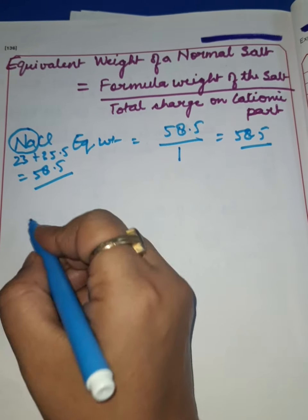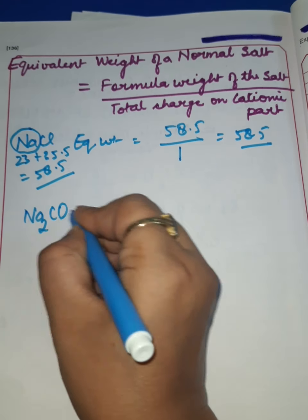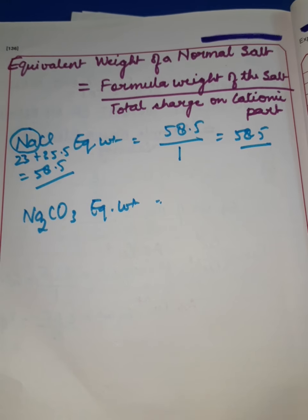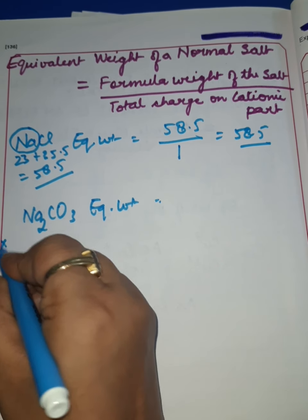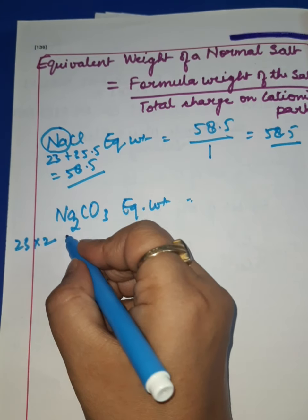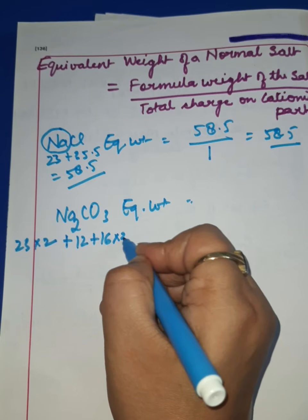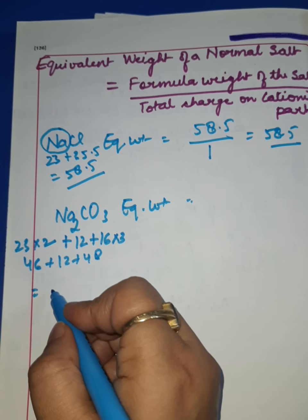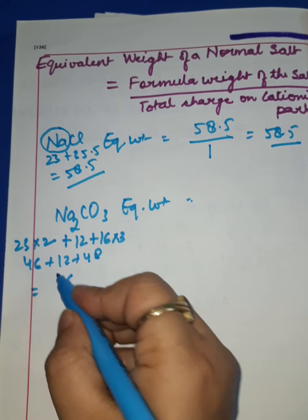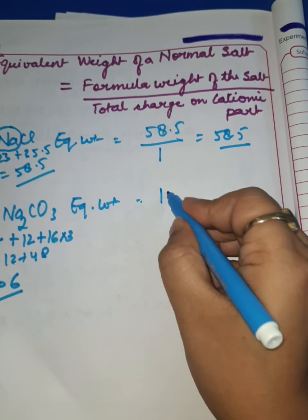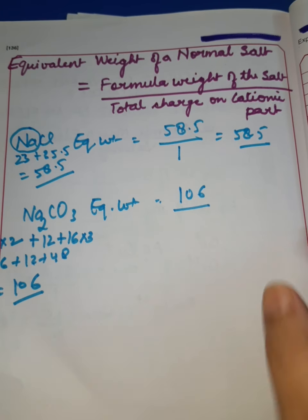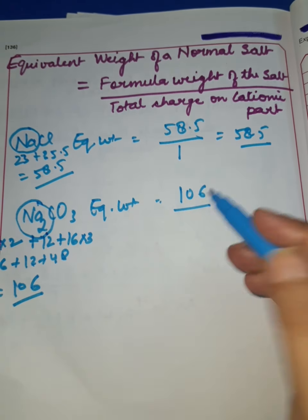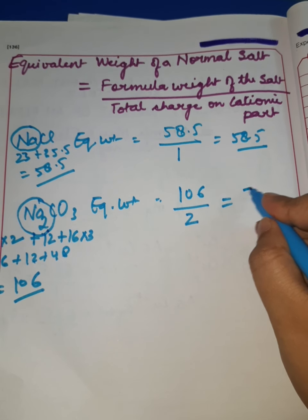Now suppose we take the example of Na₂CO₃. We want to calculate its equivalent weight, which equals formula weight divided by total charge on the cationic part. Formula weight is 23×2 plus 12 plus 16×3, giving 46 plus 12 plus 48, which equals 106. Divided by total charge on the cationic part: there are 2 Na⁺ ions, so total charge is 2. Therefore, equivalent weight equals 106 divided by 2, which is 53.